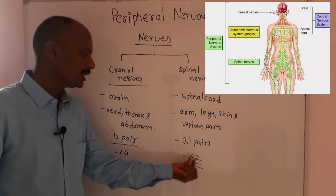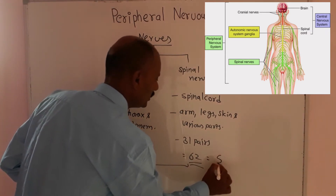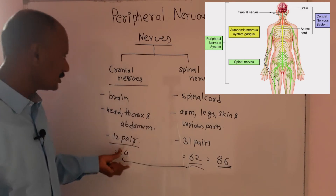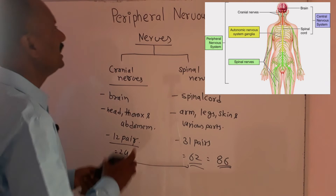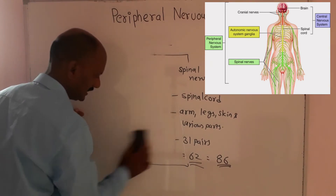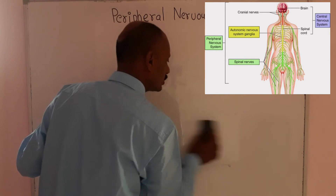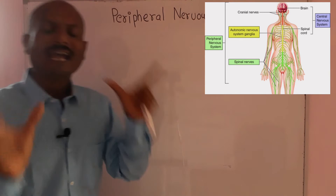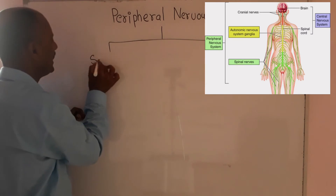So in total, 62 spinal nerves and 24 cranial nerves gives us 86 nerves altogether. The peripheral nervous system includes these nerves. The central nervous system includes the brain and spinal cord, and the nerves coming out from them form the peripheral nervous system. The peripheral nervous system has two parts.